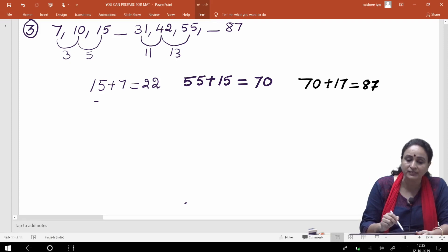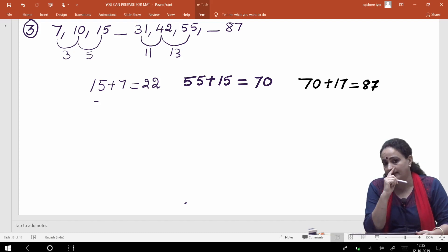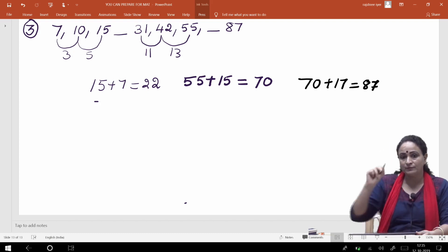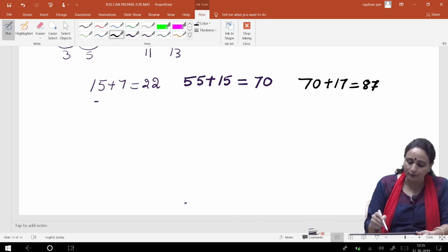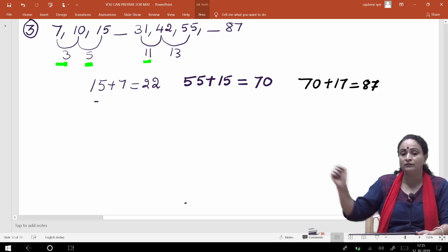7 aur 10 ke beech ka difference hai 3. Then 8 aur 10 ke beech mein - no wait, 10 aur 15. Ab next numbers ka dekhiye ga, 31 aur 42, the difference is 11. 42 and 55, the difference is 13. And then dash and then 87. So kya dikh raha hai mujhe? Jo series mein jo number ke patterns ban rahe hain yahan par, usmein aapko dikh raha hai ki, jo difference hai, the difference is increasing order of the odd numbers.